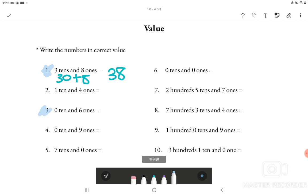Looking at number 3 it says 0 tens and 6 ones. So it will be just 0 and 6 which means the answer is 6.